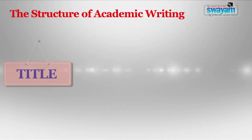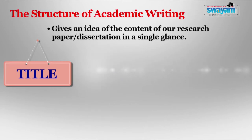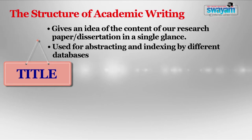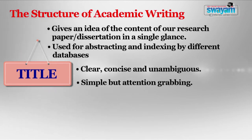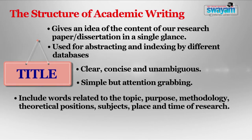First of all, let us discuss the title. The objective of creating a good title is to give to the reader an idea of the content of our research paper or dissertation in a single glance. The title will be used for abstracting and indexing by different databases. Hence, it should contain words and phrases which will help the reader to access our papers. It is important to frame the title in a clear, concise, and unambiguous way. Good titles are simple but attention-grabbing. Conventionally, titles include words related to the topic, purpose, methodology, theoretical positions, subjects, place, and time of research.